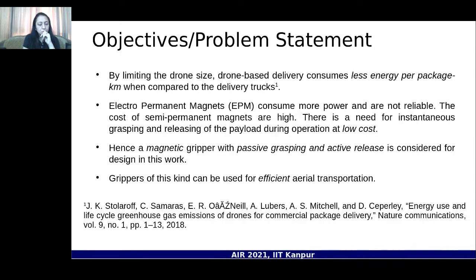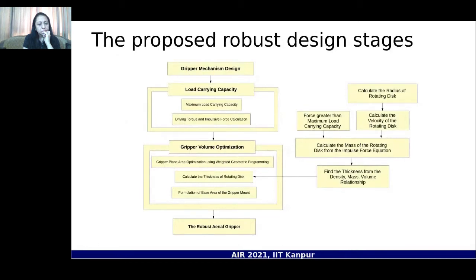There is a need for a gripper that can grasp almost instantaneously and release the payload at a very low cost. Hence we chose a magnetic gripper with passive grasping using permanent magnets, and release using a Scotch-yoke mechanism. The proposed robust design stages are: gripper mechanism selection, calculating load carrying capacity, optimizing the volume of the gripper, resulting in a robust aerial gripper from a design point of view.